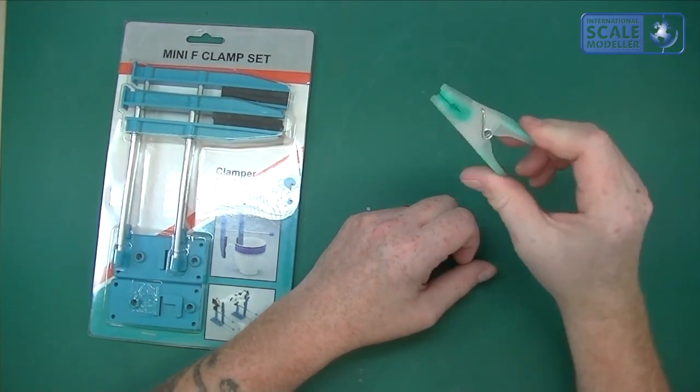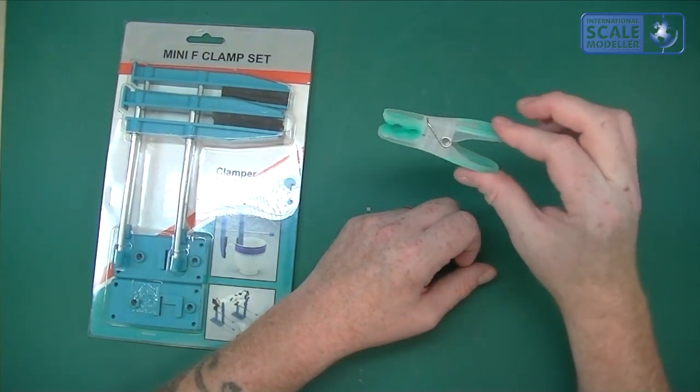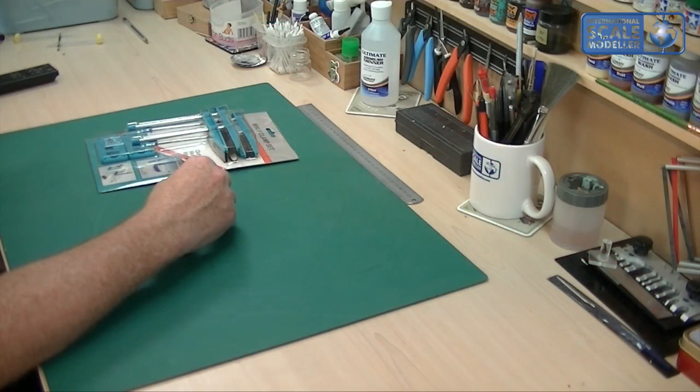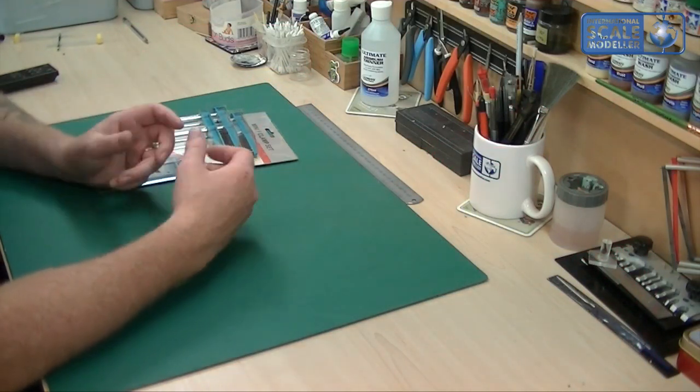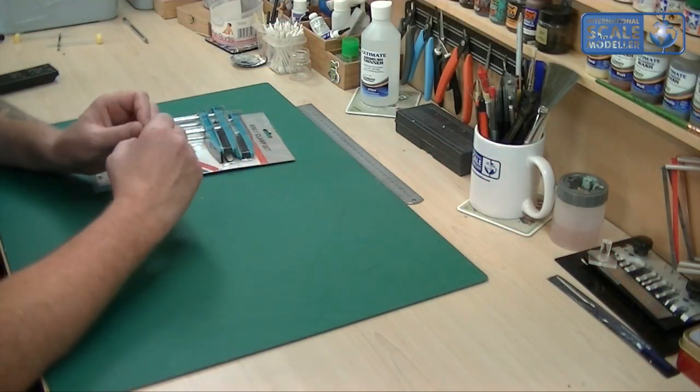But you can't control the amount of pressure that you put on, so you can overdo it. And obviously if you're using Tamiya then you can squeeze those joints and then you get that line of excess or welded plastic on the outside.